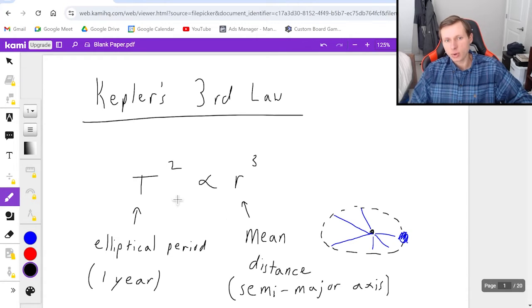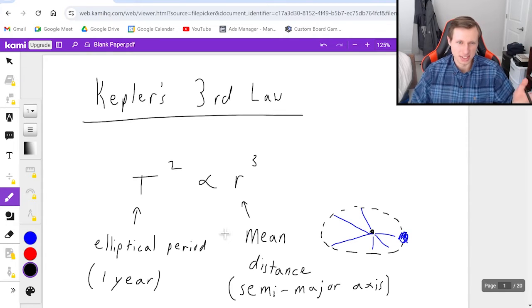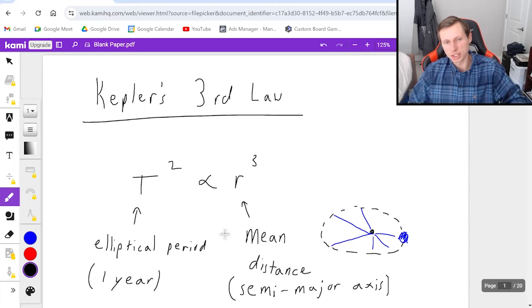And again, this equation says T squared is proportional. Proportional does not exactly mean equal, but what it does mean is that I'm going to be able to compare a planet that I know very well, such as the Earth, and I can compare that to other planets using this equation.